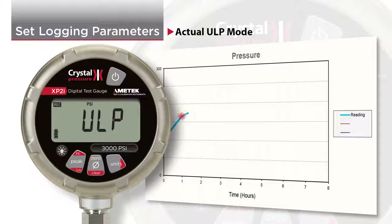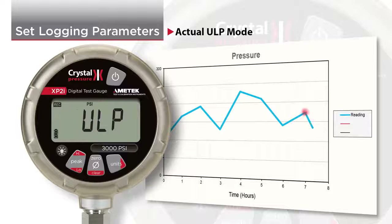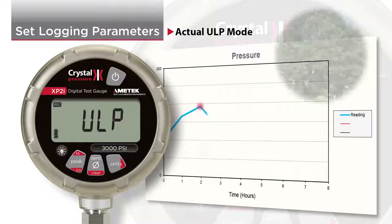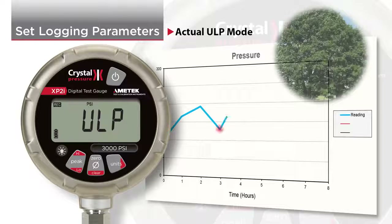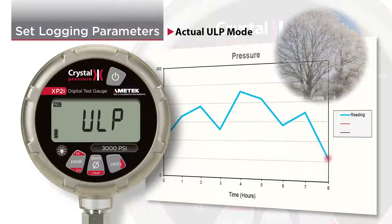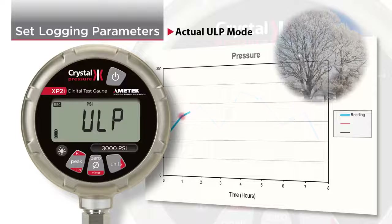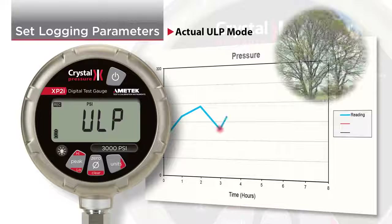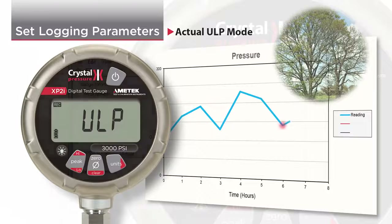Actual ULP stands for actual ultra-low power mode. Actual ULP records the actual pressure being measured at every logging interval, just like actual mode, but ultra-low power mode maximizes the battery life of your XP2i, allowing you to record continuously for up to one year on one set of batteries.